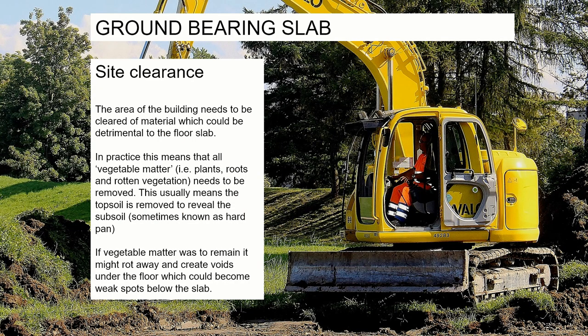The first thing we have to do when building a ground bearing floor is remove material that could possibly damage the construction in the future. On drawings you'll see notes saying things like 'remove vegetable matter' — they're not speaking about carrots and onions; they mean roots, leaves, bits of twig. Anything that could rot away and cause a void underneath the floor, which would be a weak spot in the slab.